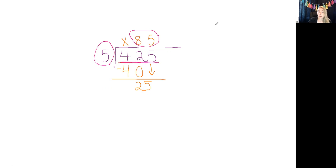So we're going to say, okay, quotient 85 times divisor 5. We're going to see if we end up with our answer being the dividend, which is right here.